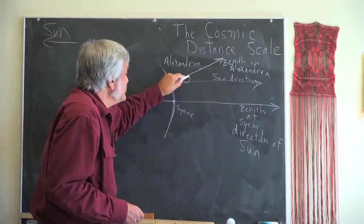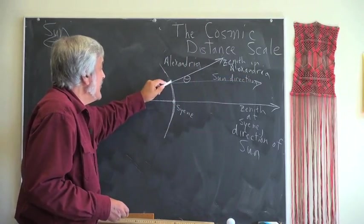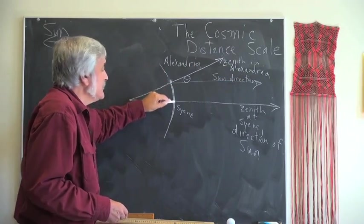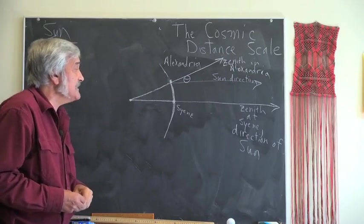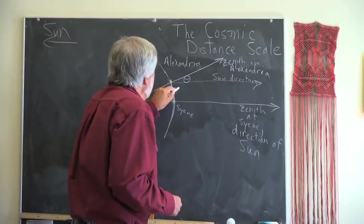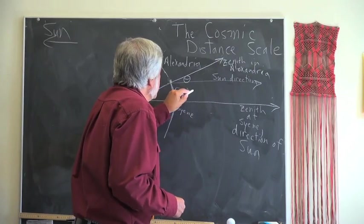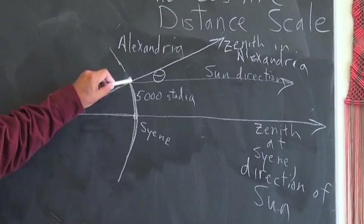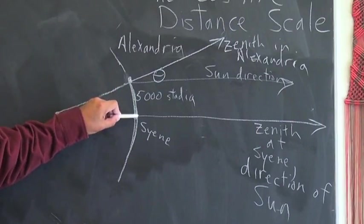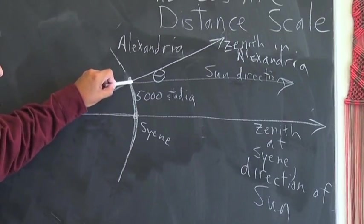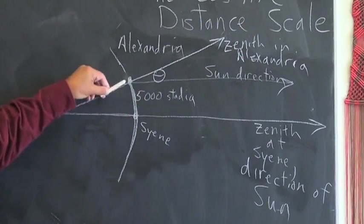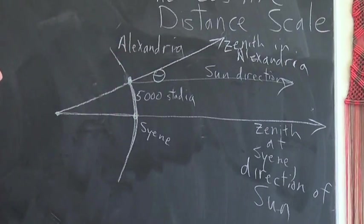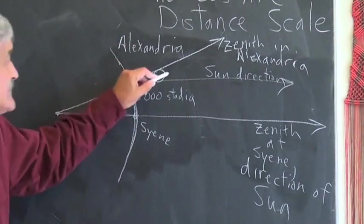At the corresponding time and date in Alexandria, which was 5,000 stadia north of Syene, the Sun was slightly south of the zenith. So its rays made an angle of about 7 degrees to the vertical. So here's the vertical in Alexandria pointing this way. So this is the zenith in Alexandria. And that makes an angle of 7 degrees to the Sun.